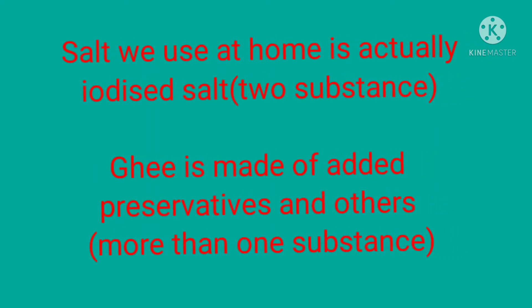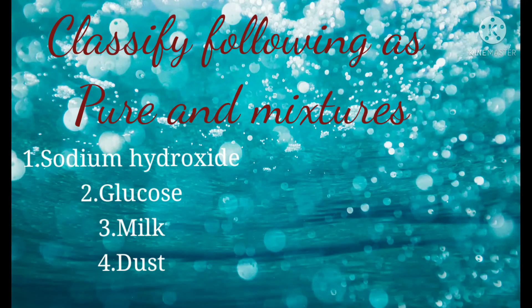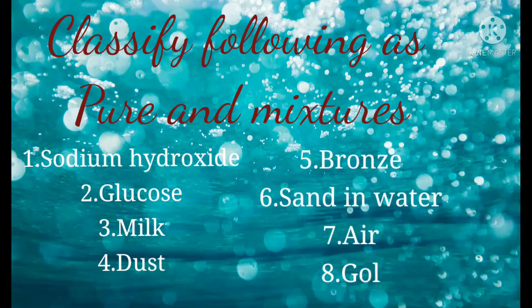Examples of pure substances include elements and compounds, which can be of different types: metals, non-metals, metalloids, organic and inorganic compounds. The salt we use is actually iodized salt, and ghee is made up of many preservatives and other chemicals added together. Substances having more than one pure substance in them are known as mixtures. Now let us classify the following into pure and mixtures: sodium hydroxide, glucose, dust, bronze, sand in water, air, gold. Put your answers in the comment section.